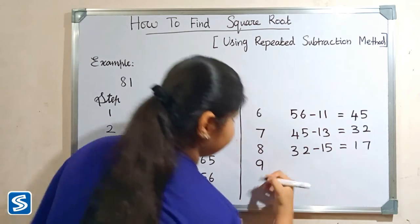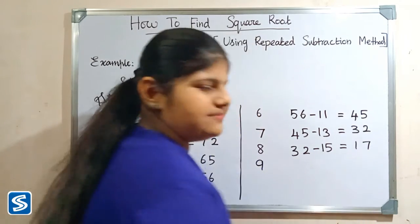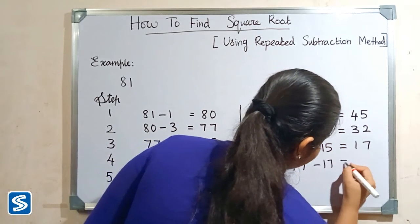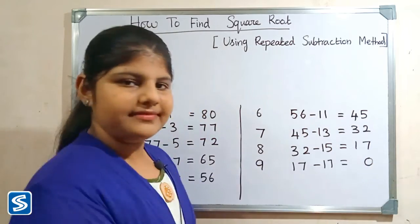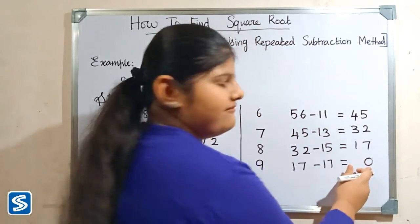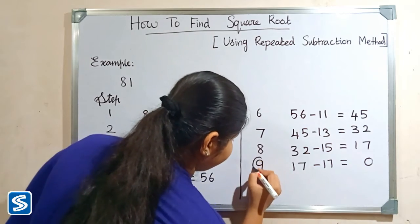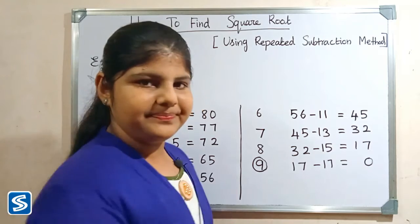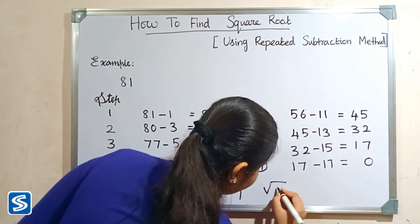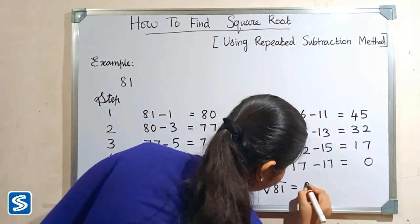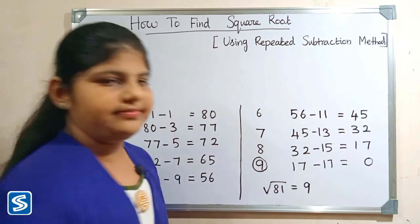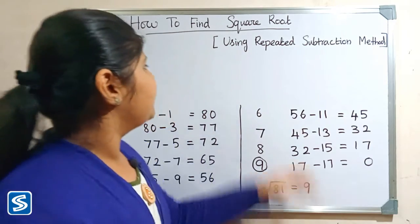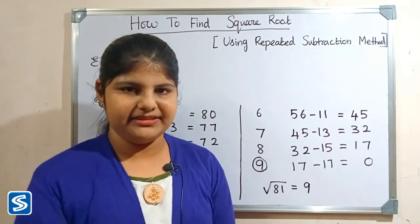Step 9: Subtract 17 from 17, so 17 minus 17 equals 0. You can see here we got 0 in the 9th step, so the square root of 81 will be 9 using the repeated subtraction method.